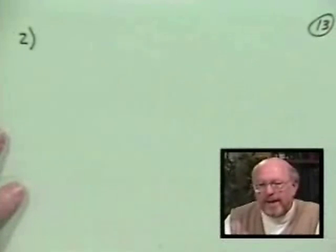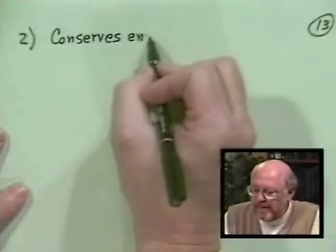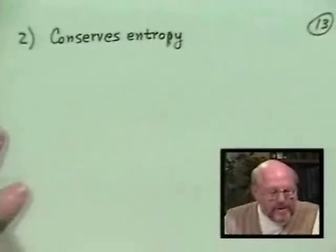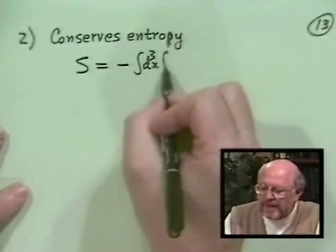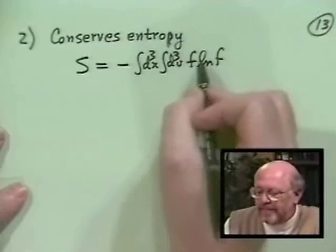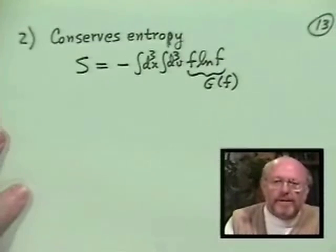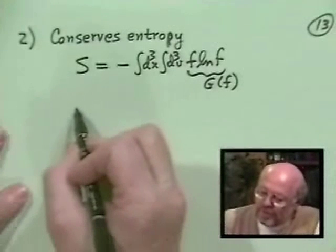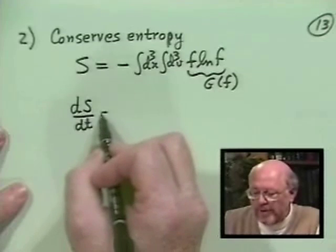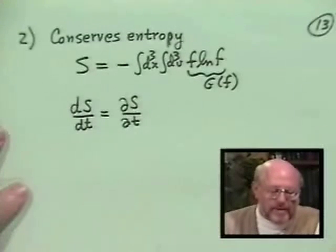The second general property of the Vlasov equation is that it conserves entropy. You always got the second law of thermodynamics and entropy increases and so forth. Entropy, at least in the kinetic sense, is defined as the integral d³x d³v of f log f, or in plasma physics we sometimes even generalize this to some generalized entropy functional. What you can show is that if you take the total time derivative ds/dt and substitute in the Vlasov equation, this turns out to be absolutely zero.